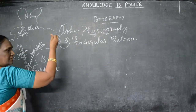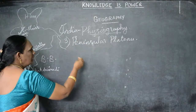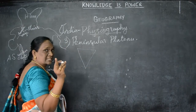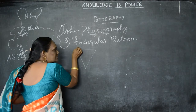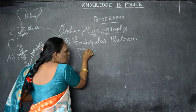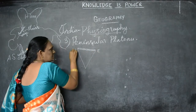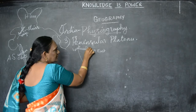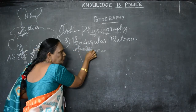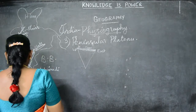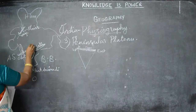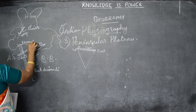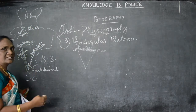The Peninsula Plateau is somewhat triangular in shape, sloping from the western side to the eastern side. This eastward slope is very important. River Narmada divides the Peninsula Plateau into two parts — North India and South India.